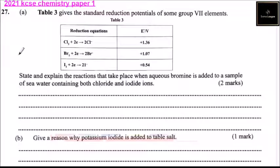Question number 27. Table 3 gives the standard reduction potentials of some group 7 elements. So we have table 3, we have reduction equations.